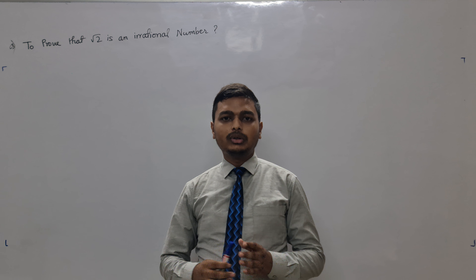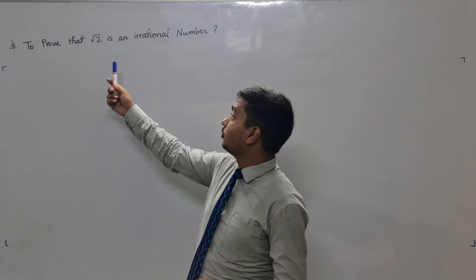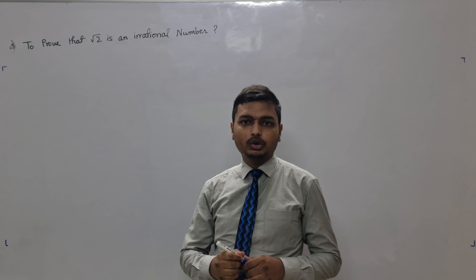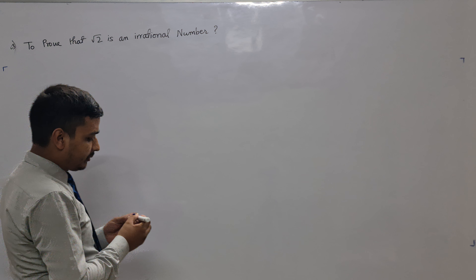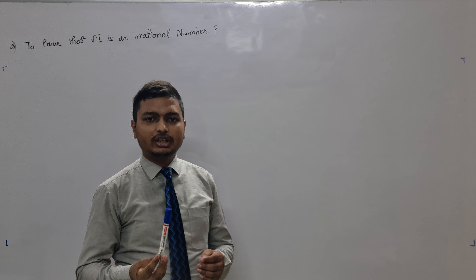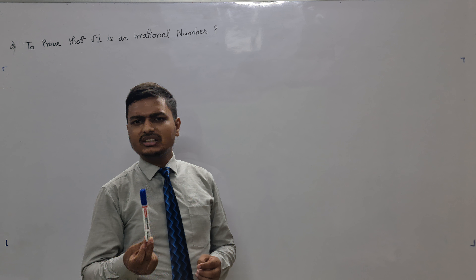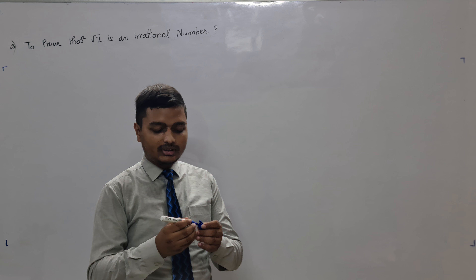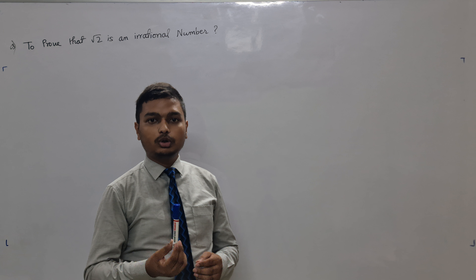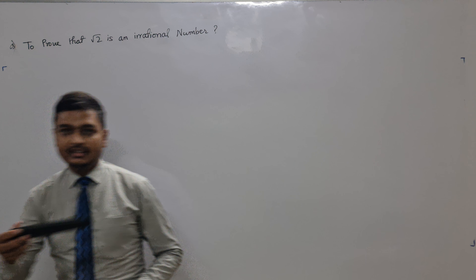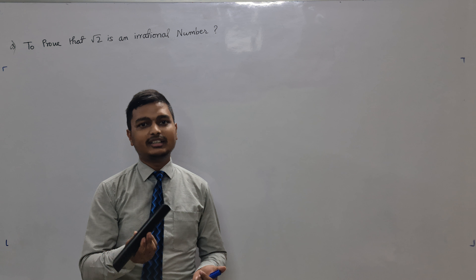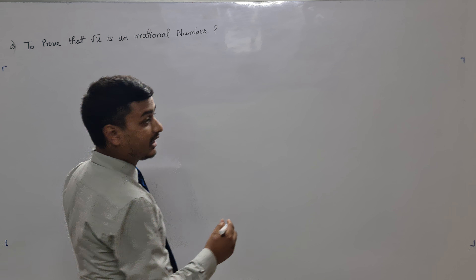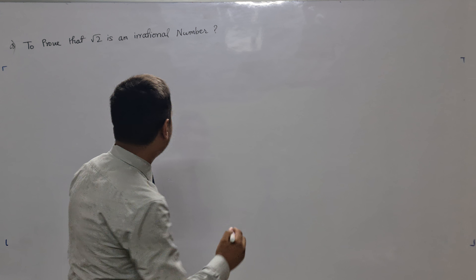Today we are going to learn a very important topic: to prove that root 2 is an irrational number. We are going to prove this using the contradictory method. For example, suppose I am telling you it is a pen and you are telling me it is not a pen — I can prove it by writing with it. If I cannot write with it, like with a remote, then it is not a pen.